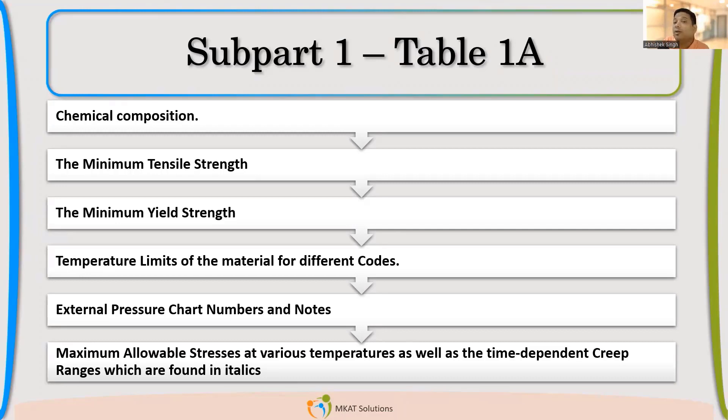So Table 1A, what are the things which are covered? We are going to see in the code also. If you have opened the code, you can just see that. We will also try to open the code and see. But basically Table 1A covers what? What are the information which are given? First of all, chemical composition. So not exact chemical composition, but type like whether it is carbon steel, whether it is low alloy steel or chrome moly, what it is. So kind of material name which is given.